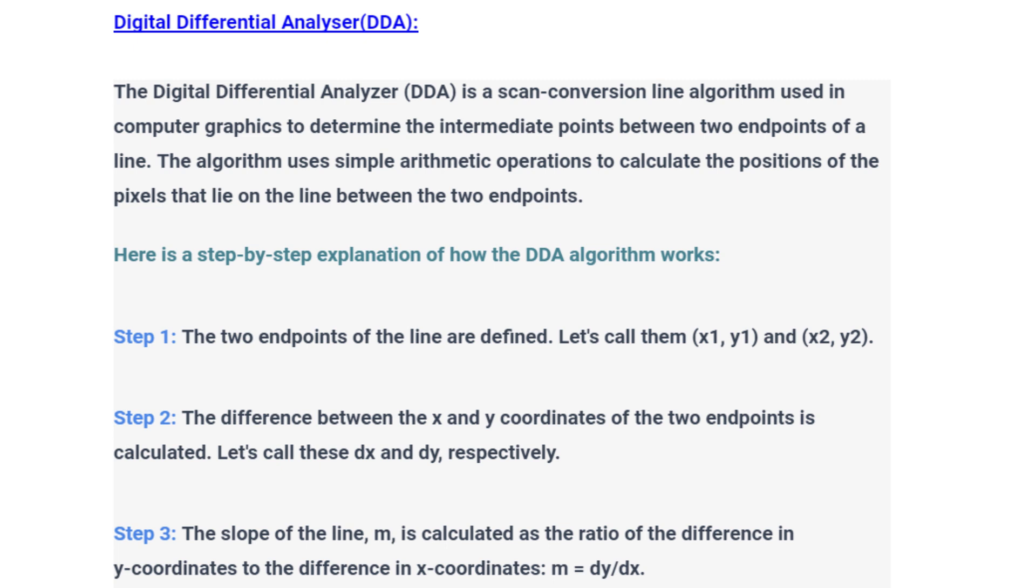Step 3. The slope of the line, m, is calculated as the ratio of the difference in y coordinates to the difference in x coordinates. m equals dy/dx.